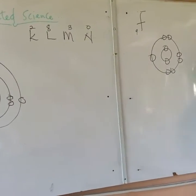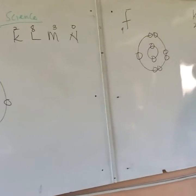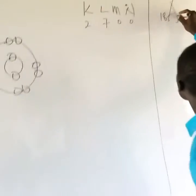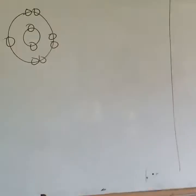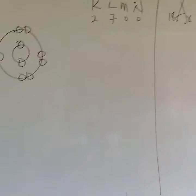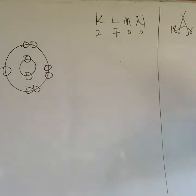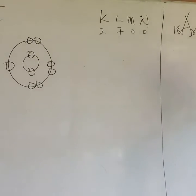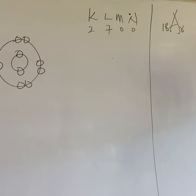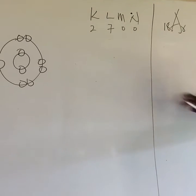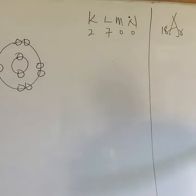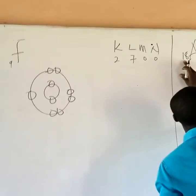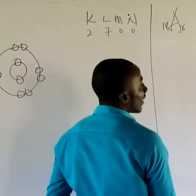The last element that we are going to draw is atomic number 18, which is argon. Let's arrange it on the table first: K, L, M, N. K will pick 2, L will pick 8. Then 2 plus 8 is 10; still extra to go. Then the rest, 8, will enter M. 2 plus 8 is 10, plus 8 is 18. N equals 0. Then let's represent it.